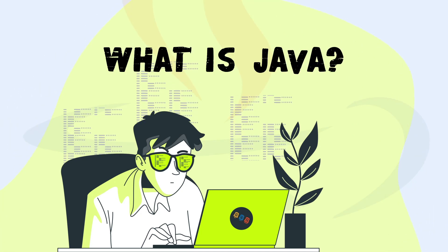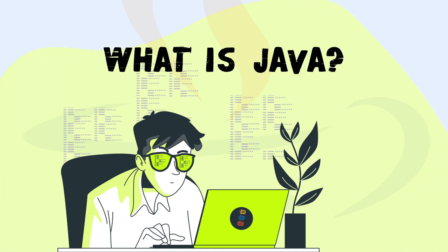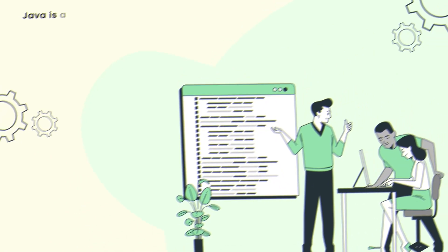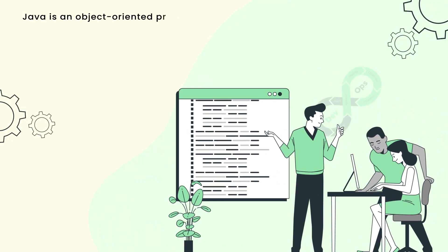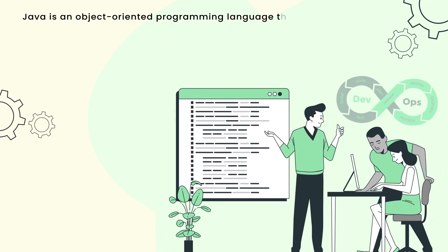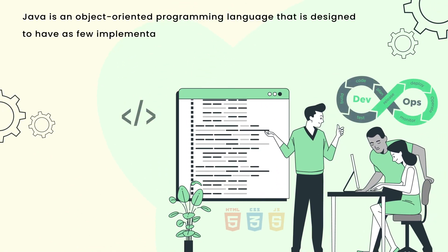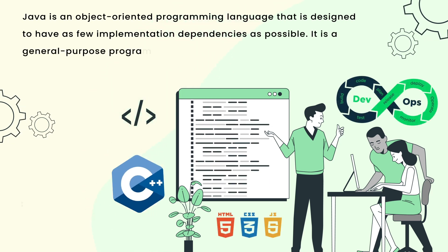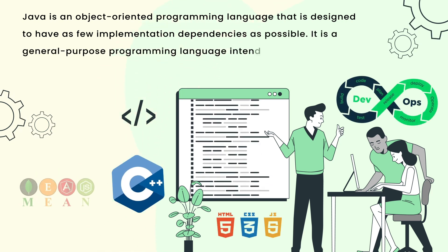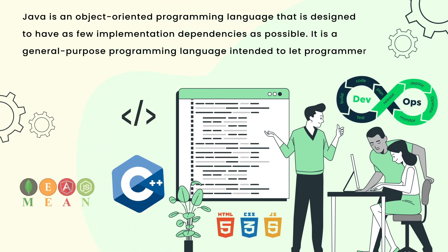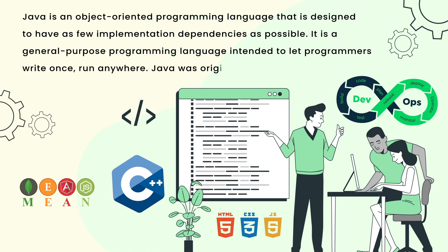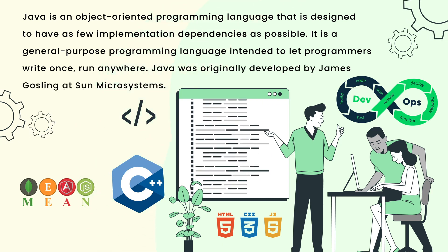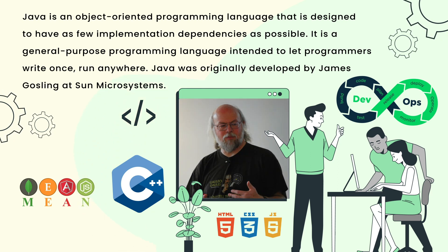What is Java? Java is an object-oriented programming language that is designed to have as few implementation dependencies as possible. It is a general-purpose programming language intended to let programmers write once, run anywhere. Java was originally developed by James Gosling at Sun Microsystems.